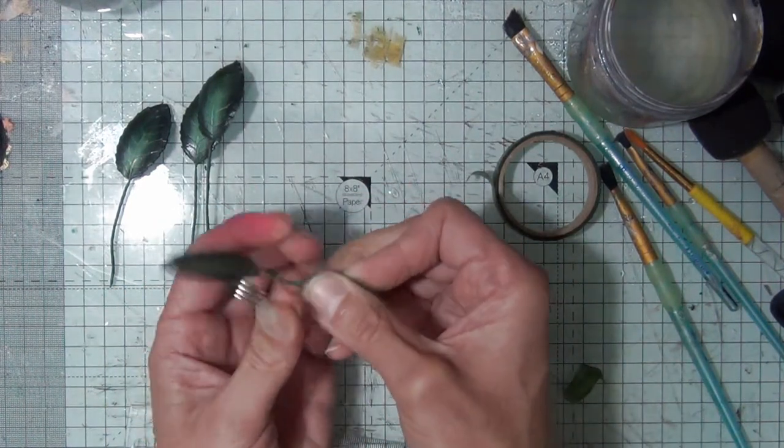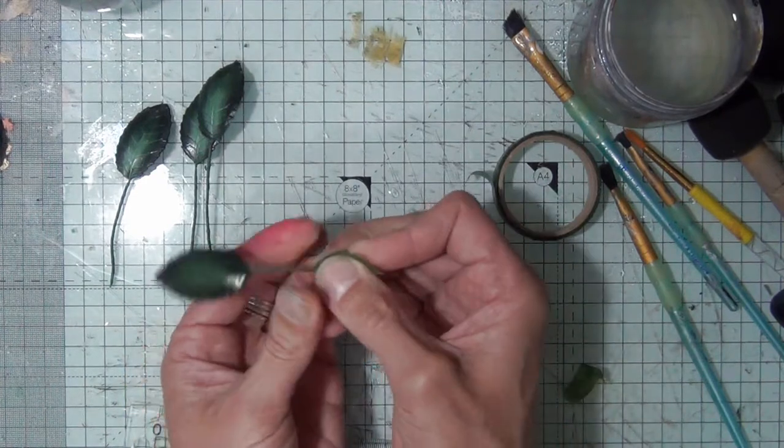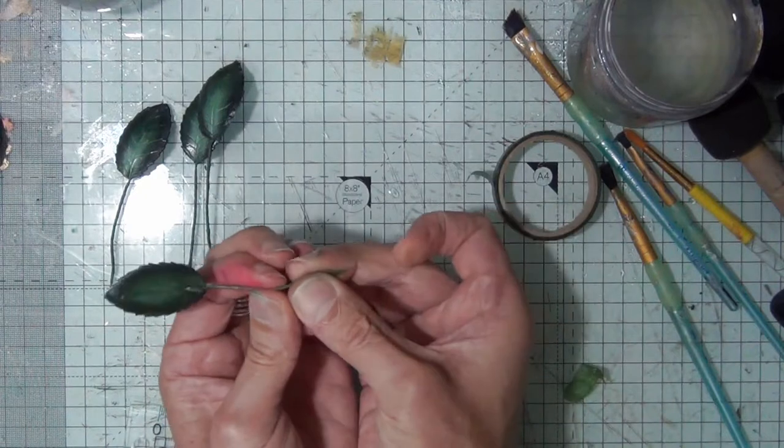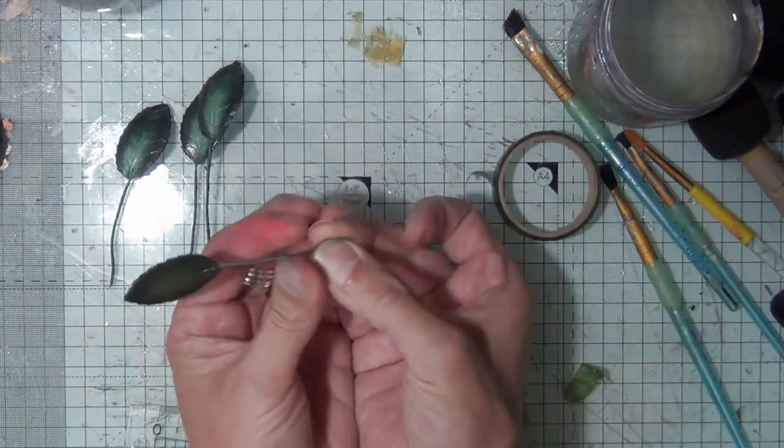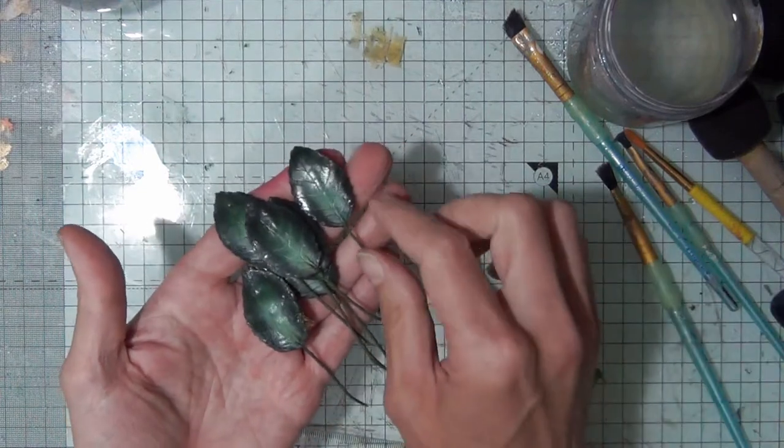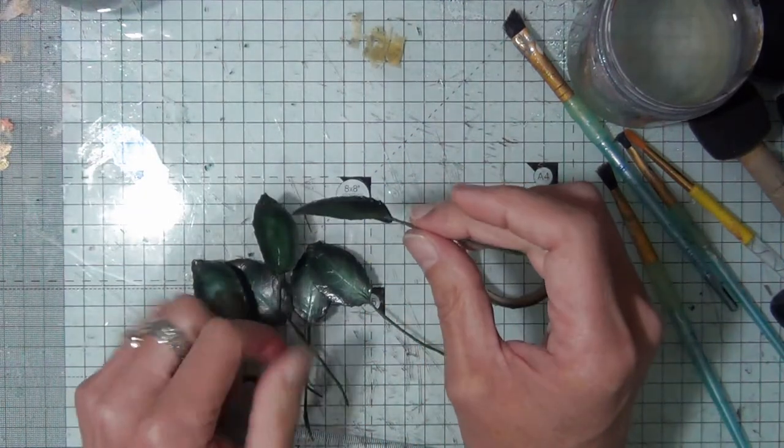So again, 45 degrees—just spin the wire and the leaf, and you're going to get a nice result every time. So there's all of our leaves all done. They are all pre-wired.